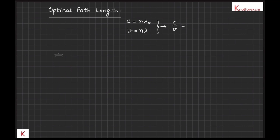Let wavelength of a light wave in vacuum is lambda naught and it is lambda in a medium of refractive index mu. Then lambda will be equal to lambda naught upon mu.